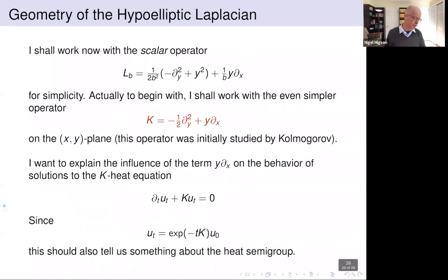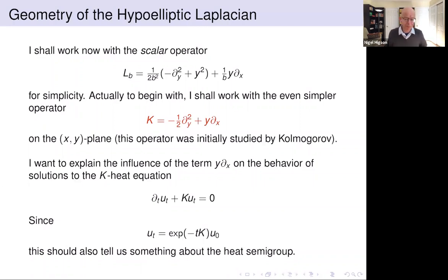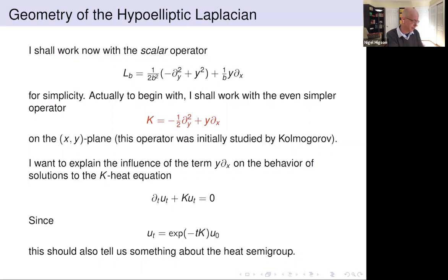In the last few slides I want to indicate where the geometry comes from, which is very simple. Let me simplify by dealing with the scalar operator instead of matrix operators. For the next couple of slides I'll study the operator K — first studied by Kolmogorov in the 1930s — operating on the plane. The question is: what does the geodesic flow term Y d/dx do to the heat kernel? If you have a solution of the heat equation with the Laplacian replaced by K, you can ask how the bulk of the solution is located as time increases.